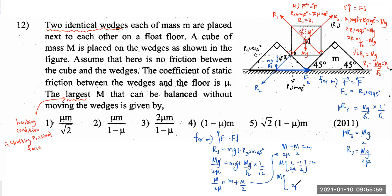Therefore, capital M equals 2μm/(1 − μ). That is the final answer, and it corresponds to the third option in the multiple choice. So the answer is option 3.